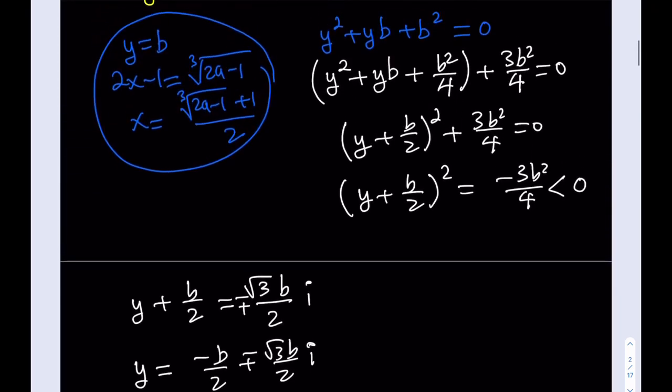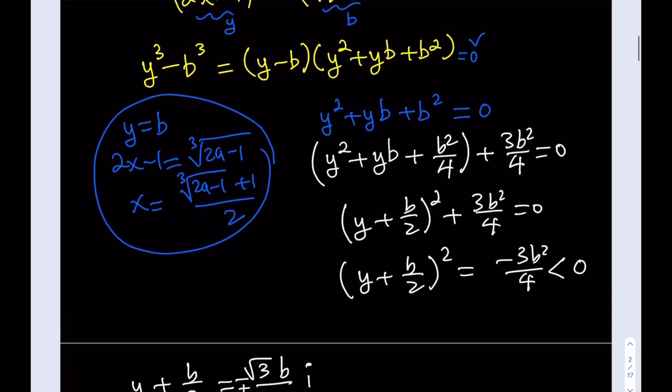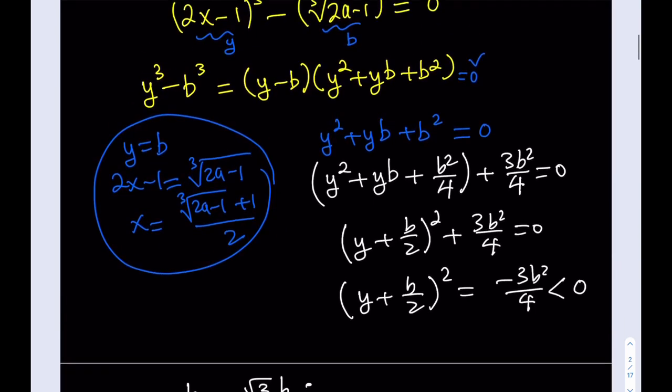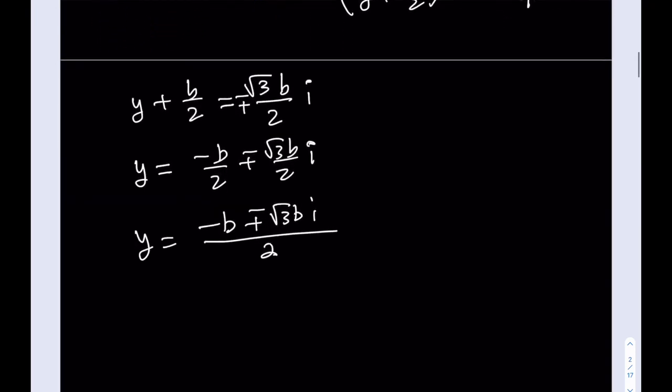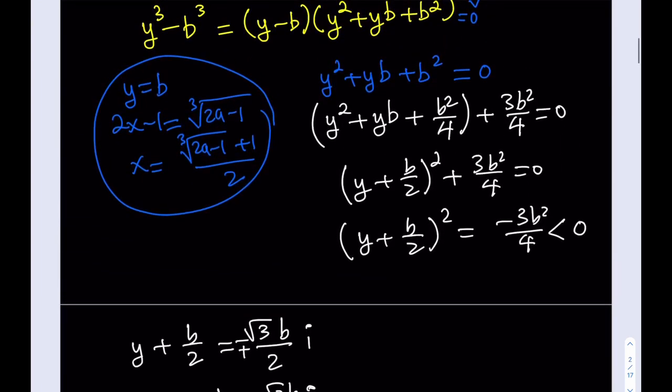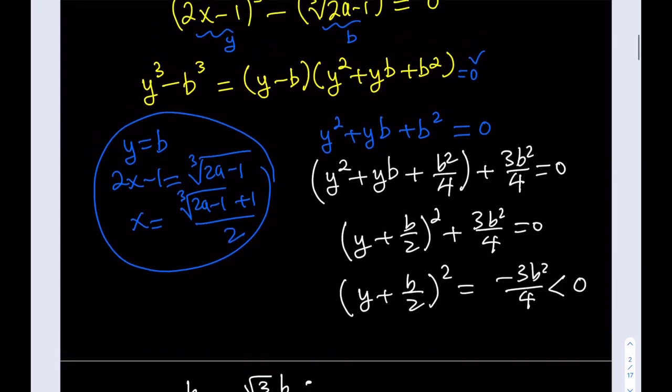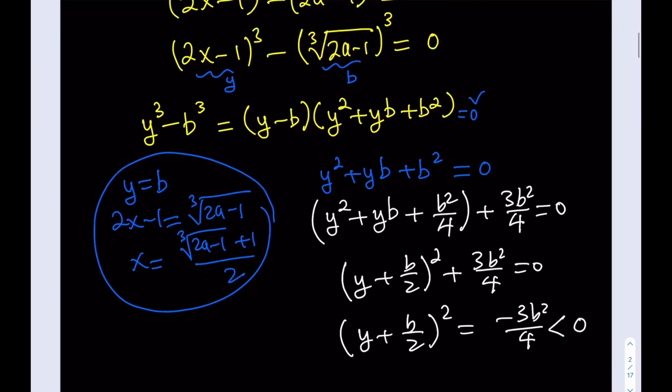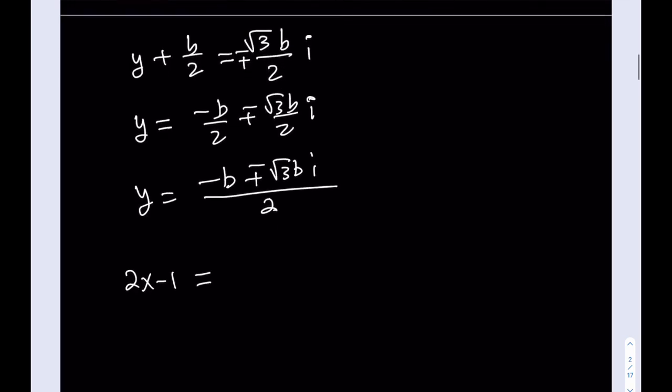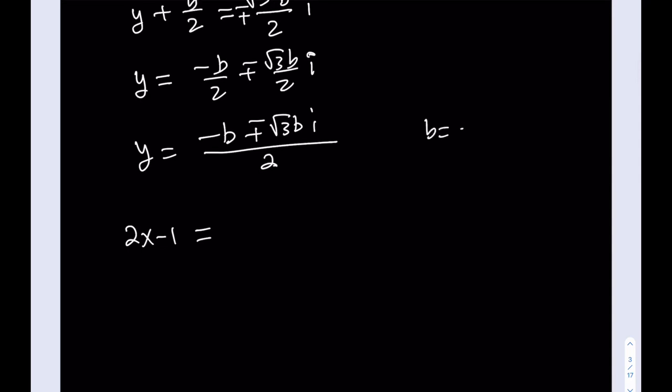But remember, I did some replacements here. So we need to go back and back substitute. What is y? What is b? Well, y is equal to 2x minus 1. So I'm going to replace y with 2x minus 1. Awesome. And the b is going to be what? b is going to be the cube root of 2a minus 1, right? The cube root. Not its cube. That's the cube root of 2a minus 1. So let's go ahead and do that. b is equal to cube root of 2a minus 1. Awesome. And it's a constant. So we have the negative cube root of 2a minus 1 plus minus the square root of 3 multiply by the cube root of 2a minus 1i all over 2.